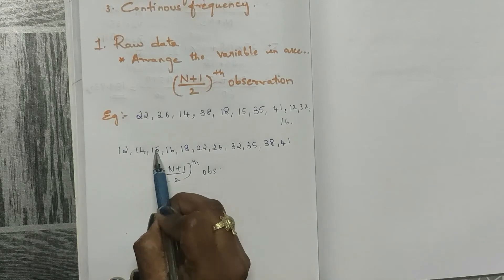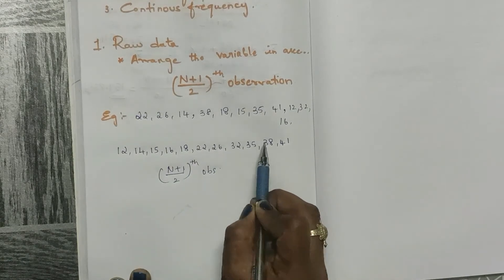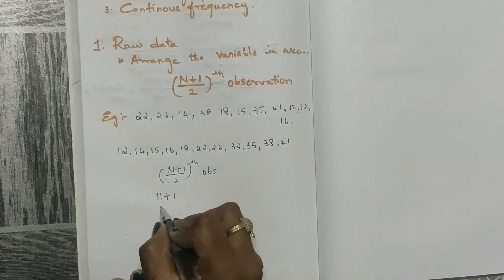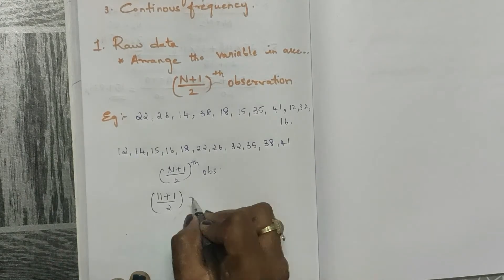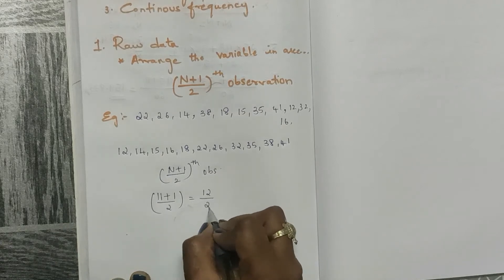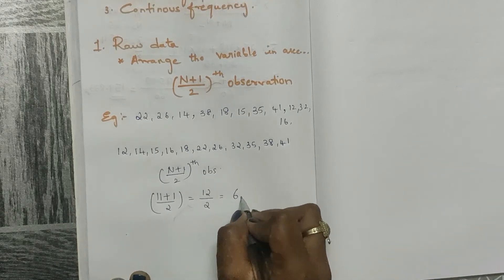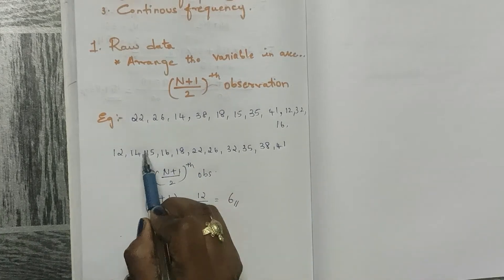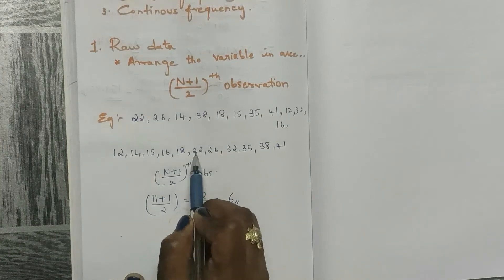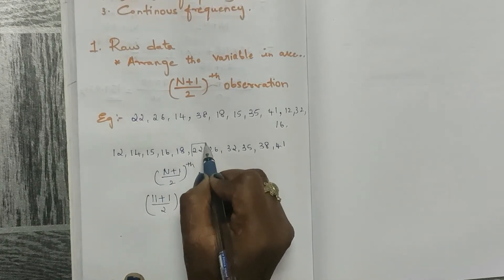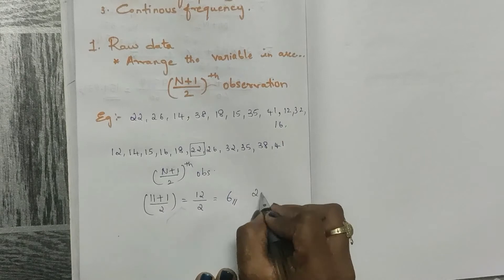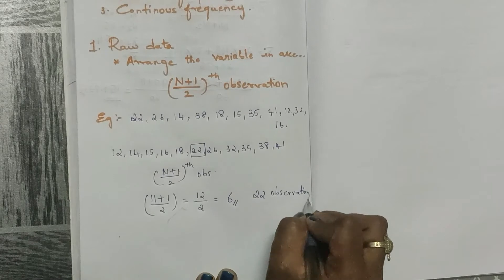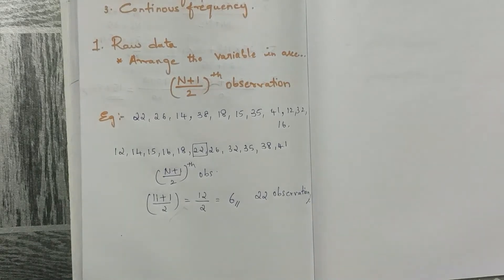Counting the variables: 1, 2, 3, 4, 5, 6, 7, 8, 9, 10, 11 — so n is 11. Then 11+1 divided by 2 equals 12/2, which is 6. Now find the 6th position: 1, 2, 3, 4, 5, 6 — the 6th observation is 22. This is how you solve median for raw data.